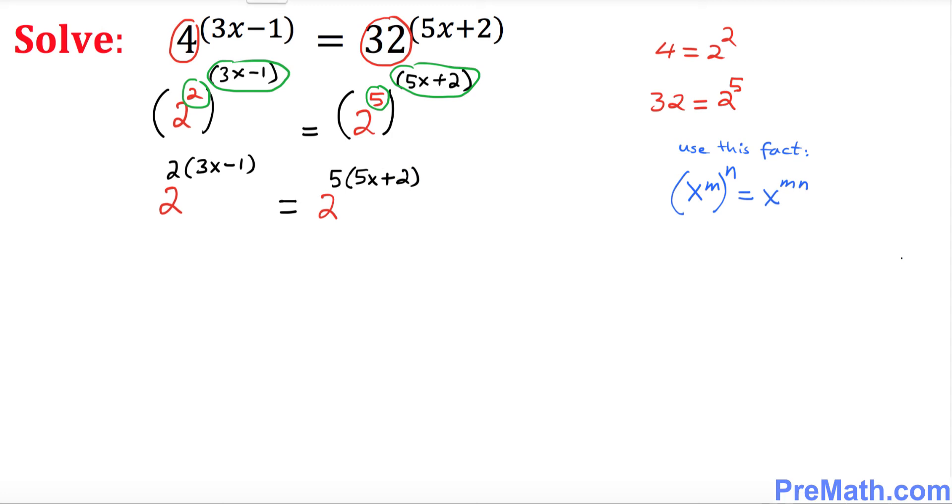Now let's distribute. We still have 2 to the power of, and we'll distribute by multiplying, so this becomes 6x minus 2.